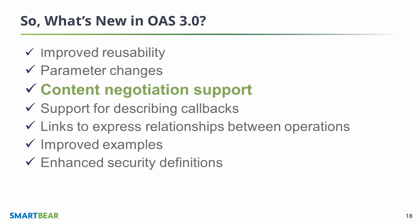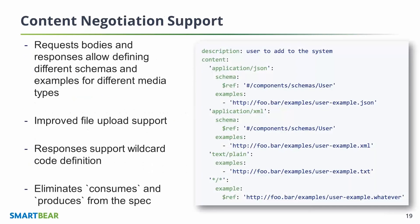Content negotiation covers both the payloads and the responses. In terms of request bodies, we eliminated the form data and body parameters and introduced a new construct called request body. It's very similar to a parameter, but you can only have one of it, and it pretty much describes the payload of the request.